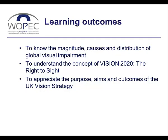The learning outcomes I'd like you to have from this talk are really three. Firstly, to get a feeling for the magnitude, the causes and the distribution of global visual impairment. To understand the concept of Vision 2020, the right to sight, and nearer to home, appreciate the purpose, aims and outcomes of the UK vision strategy.